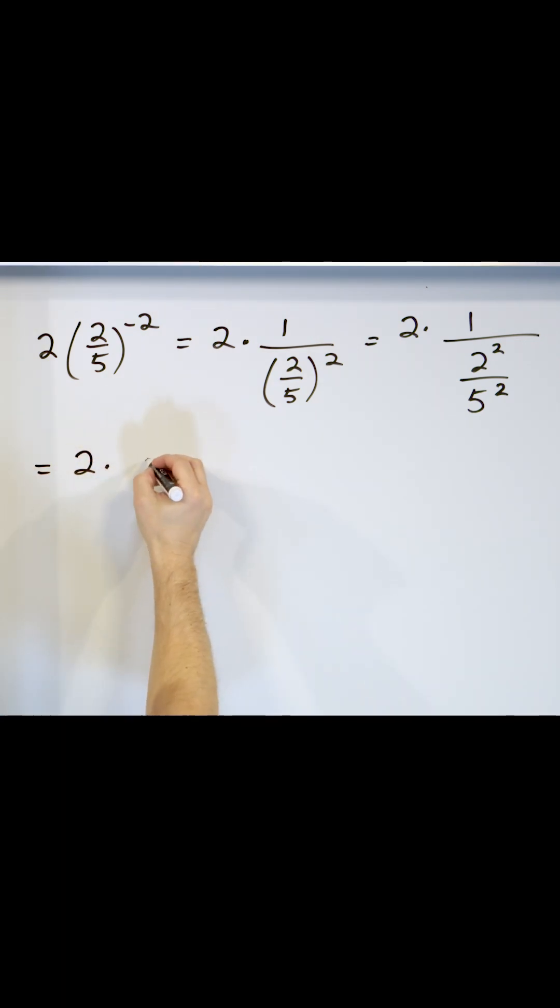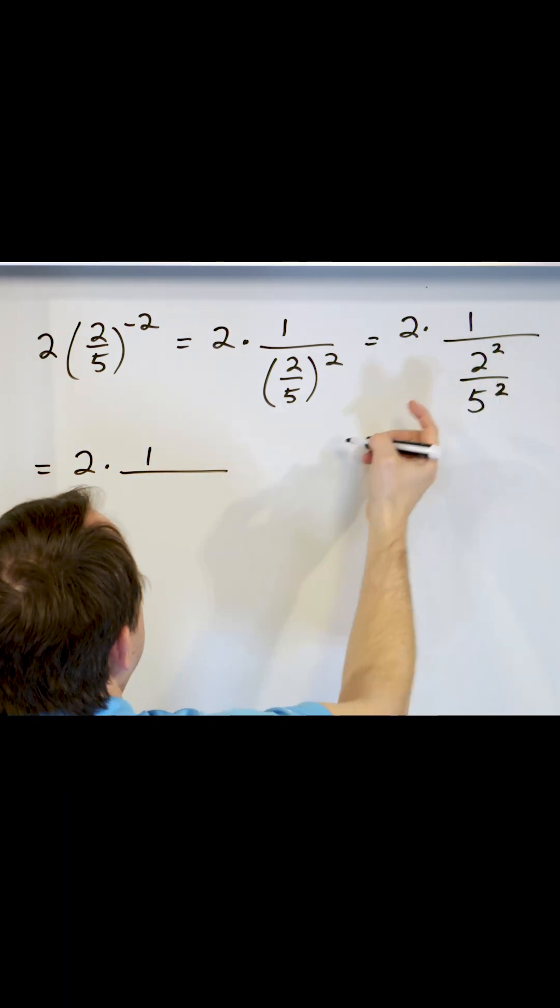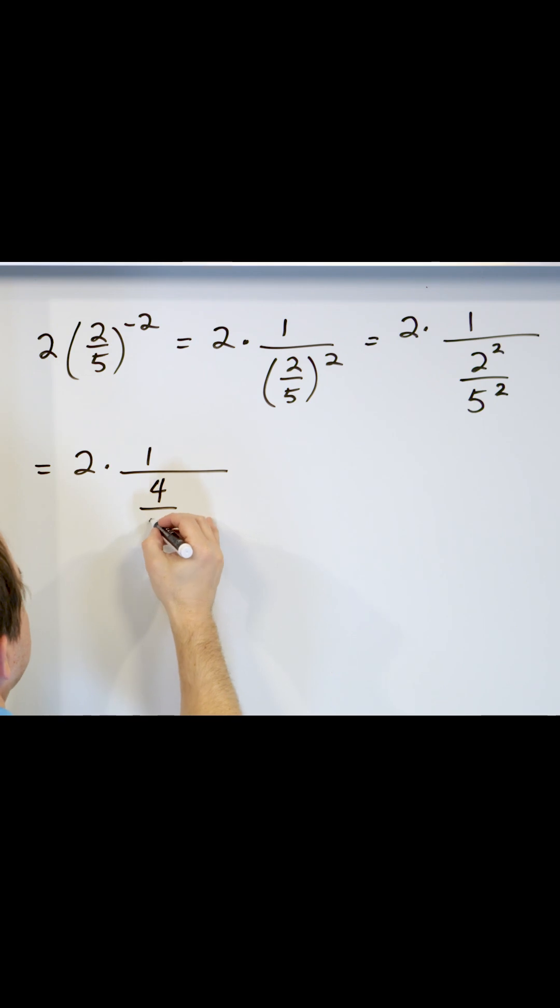So let's keep the two times here. In the bottom, 2 squared is 4, 5 squared is 25.